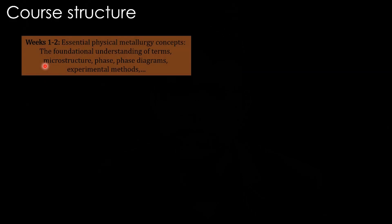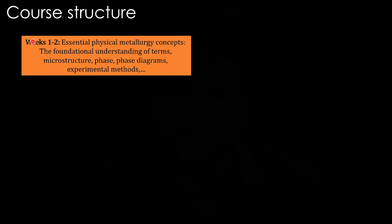The structure of the course goes like this. Weeks 1 to 2 is essentially physical metallurgy concepts — the foundational understanding of terms such as microstructure, phase, phase diagrams, and how to experimentally obtain these things. That will be our initial couple of weeks.